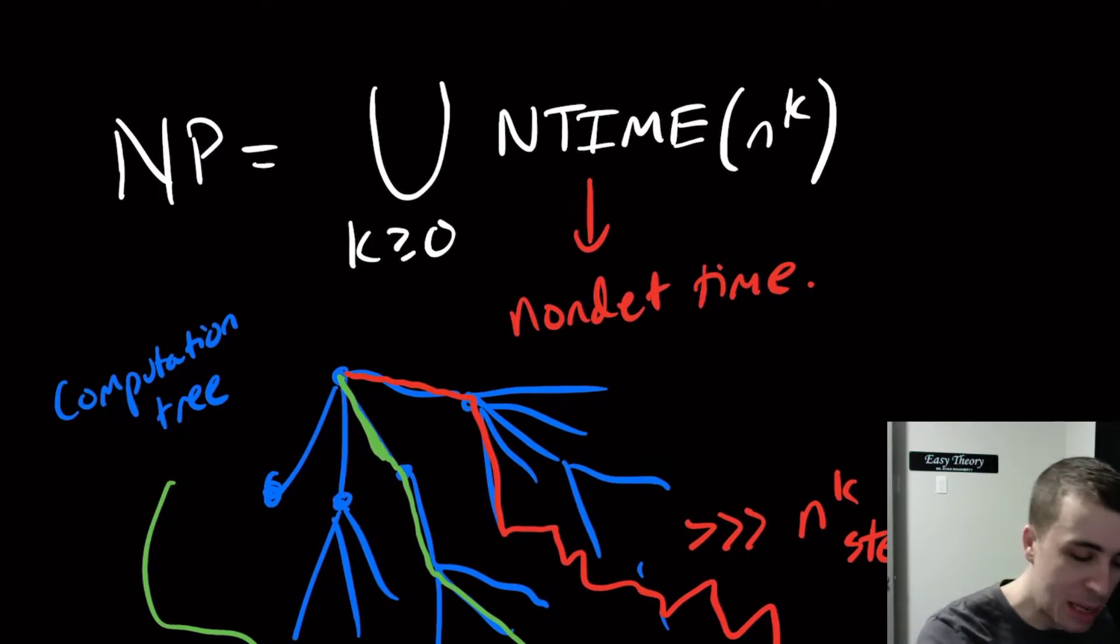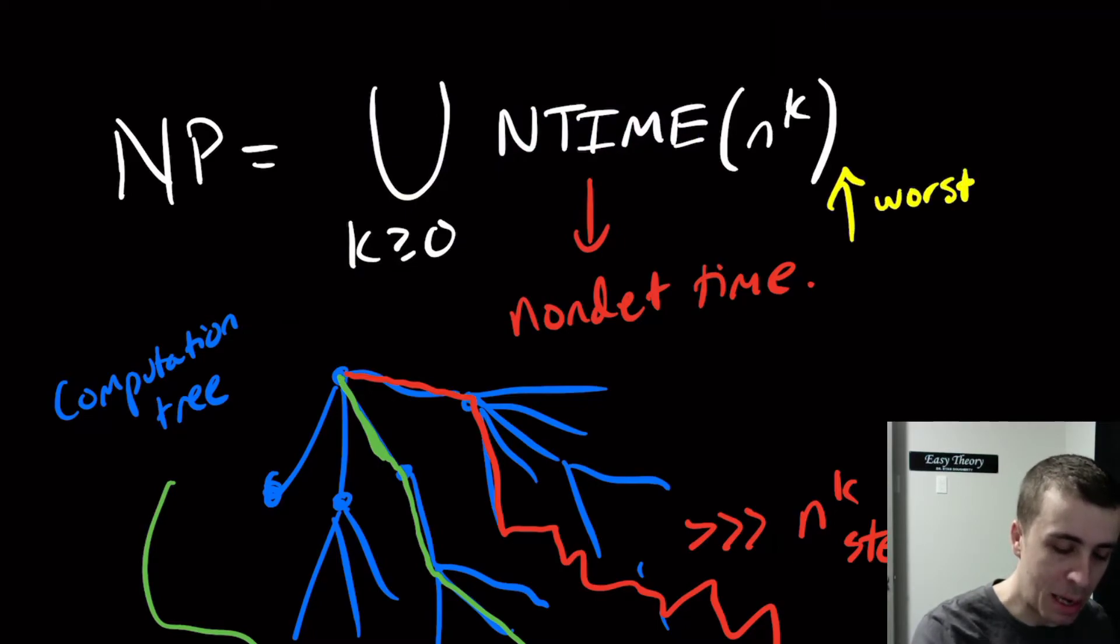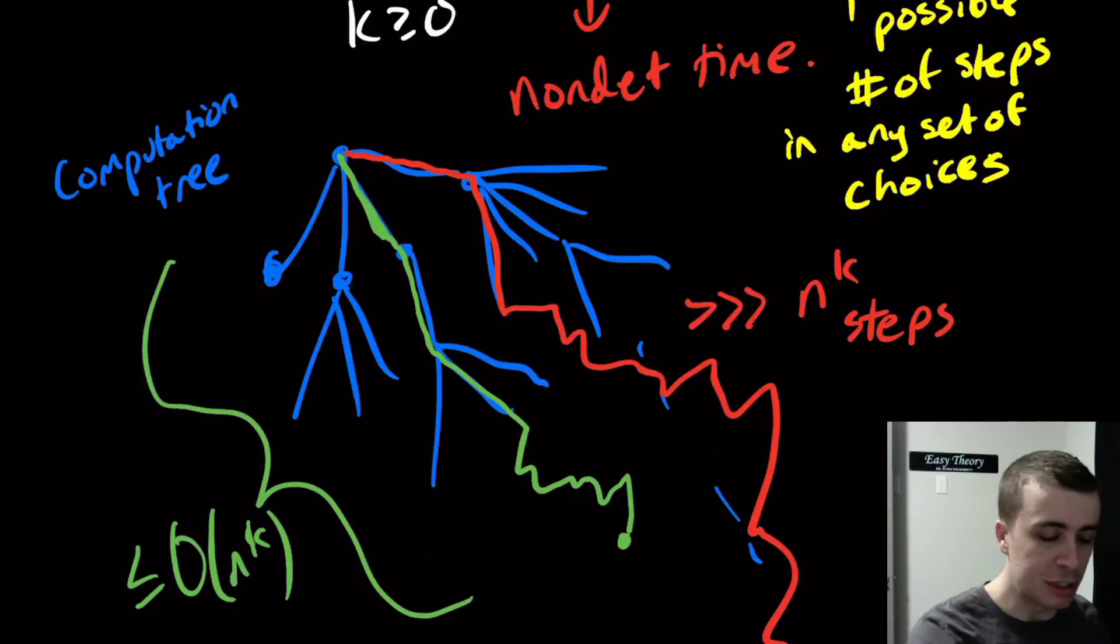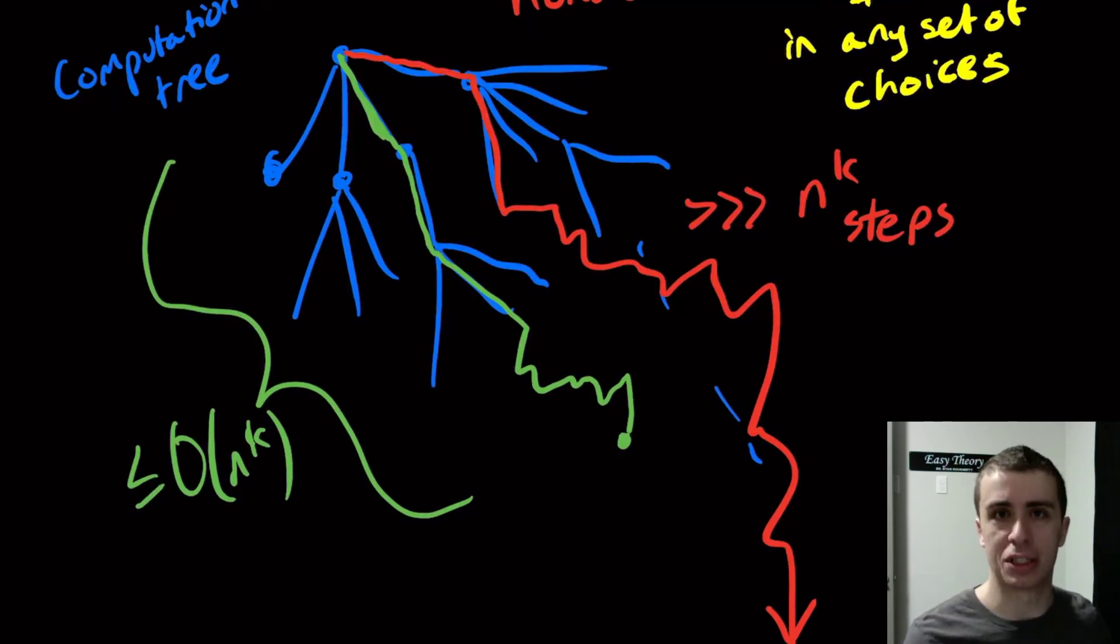So when we say NTIME n to the k, what that means, let's do it in yellow, that this is the worst possible number of steps in any set of choices. So no matter what choice you make, in any set of choices, it doesn't matter what set of choices you make. We look at the absolute most number of those, assuming that it doesn't go off to infinity. So we look at any finite amount of time taken by a sequence of choices, and we pick the one that takes the longest or any that take the longest. And that is the running time of the machine, because in principle, you could choose those really long ones instead of the really short ones.